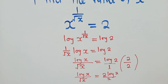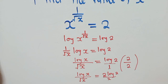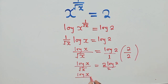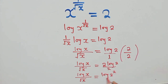Following the laws of logarithms, when you have a number in front of a log, that number becomes the power of the argument. So this becomes log x over root of x is equal to log 2 to the power 2, over 2.